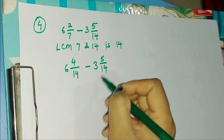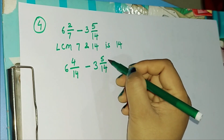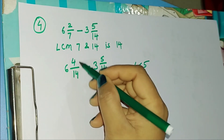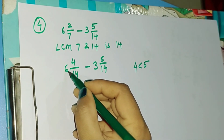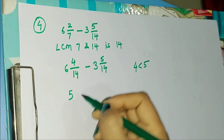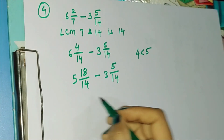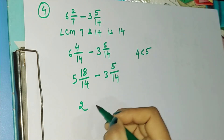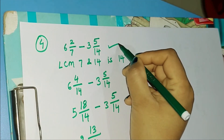Now the denominators are the same. We check whether the numerator of the first fraction is greater than the numerator of the second fraction. Here 4 is less than 5, so we need to adjust. We subtract 1 from the whole number: 6 minus 1 is 5. Then we add the denominator to the numerator: 14 plus 4 is 18, and keep the denominator as 14. Now we subtract: 5 minus 3 is 2, 18 minus 5 is 13, and the denominator is 14. So the solution is 2 13/14.